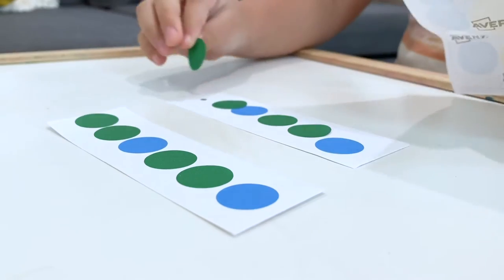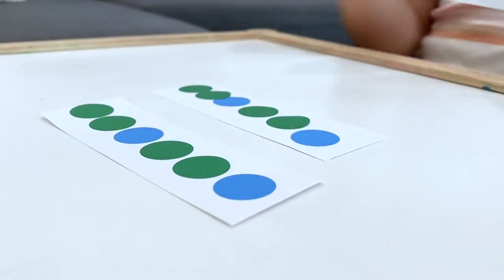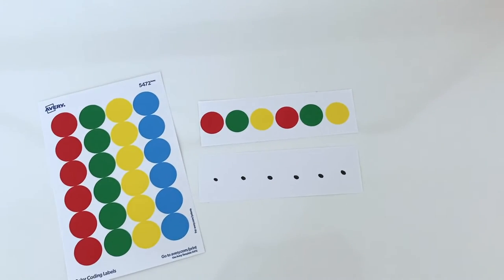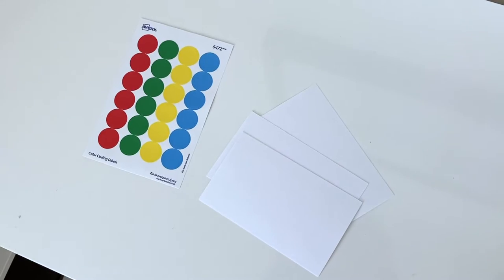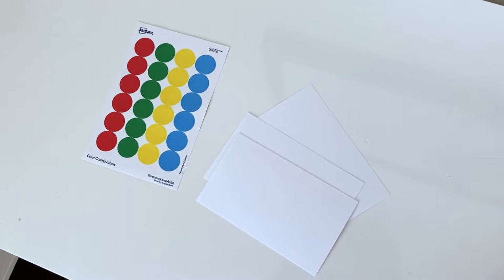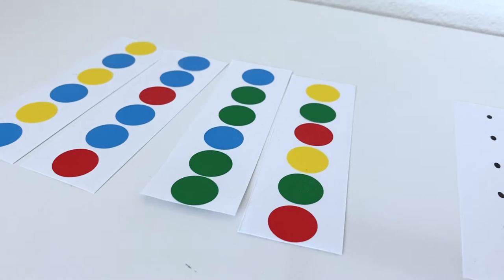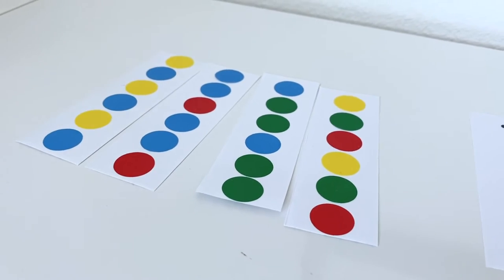For this specific activity I use flashcards and dot stickers. There's already pattern activities in our workbook that you can color but I like to find ways to make math more interactive. And what better way than using stickers? I cut the flashcard in half and on one half I created a short color pattern using the dot stickers. On the other half I marked dot guides.